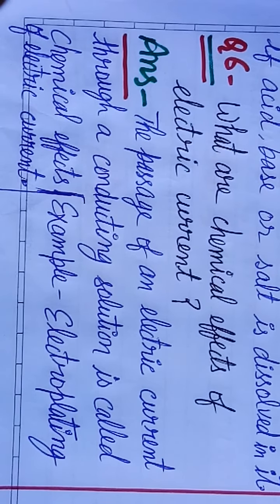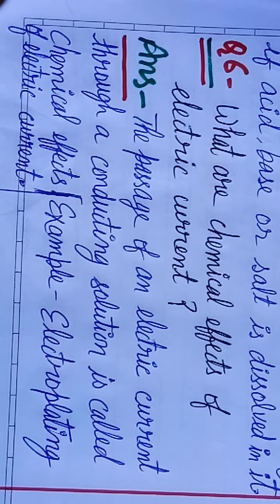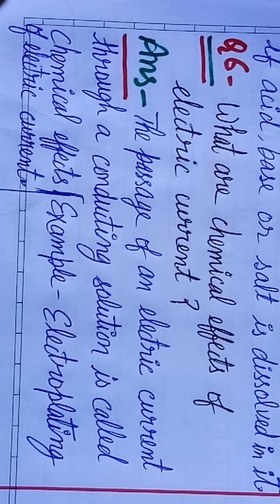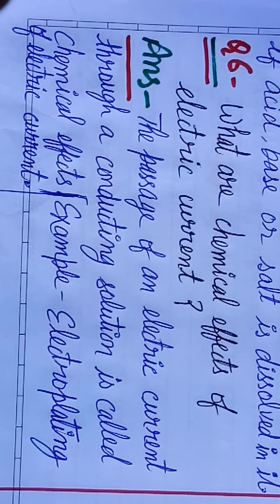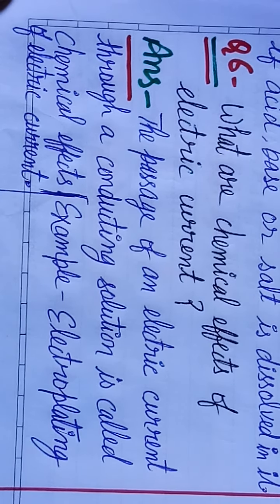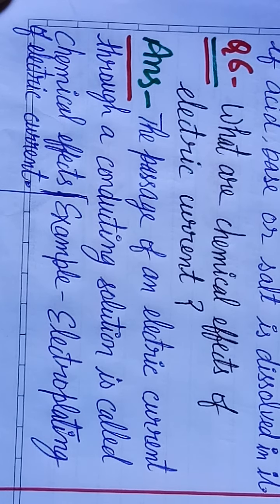The passage of an electric current through a conducting solution is called chemical effects of electric current. Example: electroplating.